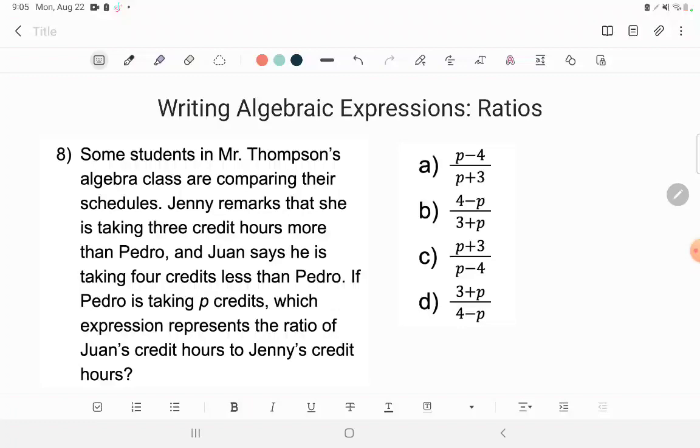The problem said this. Some students in Mr. Thompson's algebra class are comparing their schedules. Jenny remarks that she is taking three credit hours more than Pedro. And Juan says he is taking four credits less than Pedro. If Pedro is taking P credits, which expression represents the ratio of Juan's credit hours to Jenny's credit hours?